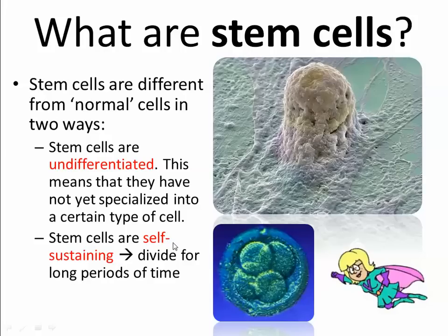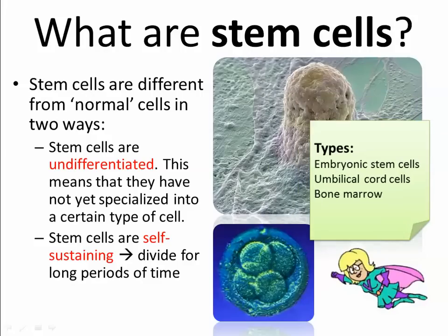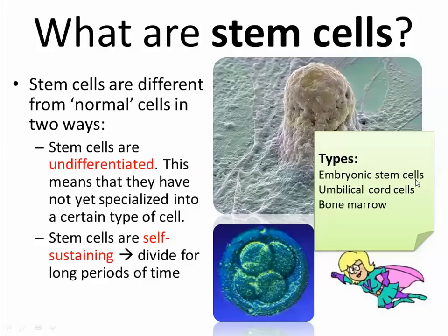Stem cells divide for long periods of time. They were there in the very beginning — they're called embryonic stem cells, from when we were an embryo. But we still have some stem cells in our bodies now. These include embryonic stem cells and also umbilical cord stem cells.